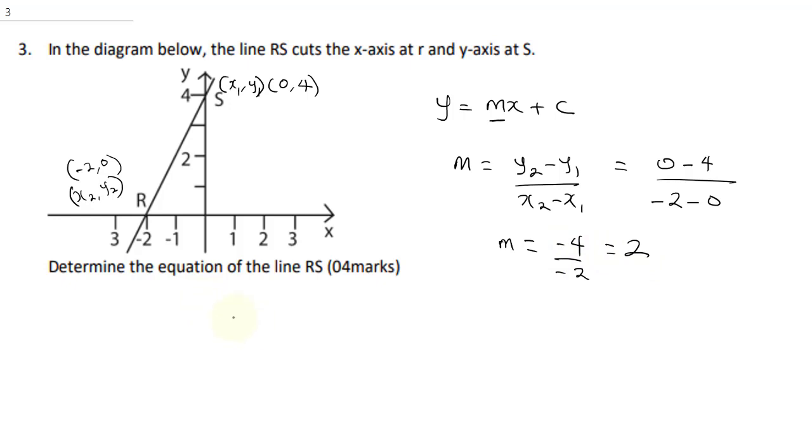Now, having gotten our slope, our y will be equal to 2x plus c. So, in order to get our c, which is our intercept, we need to solve this equation at x, y being 0, 4.